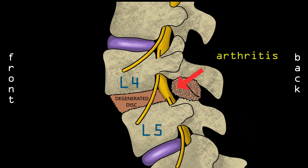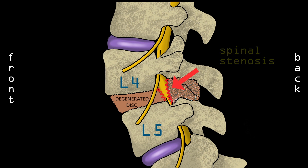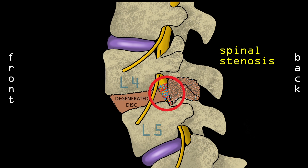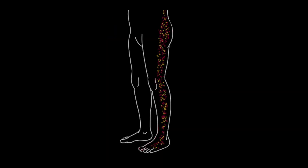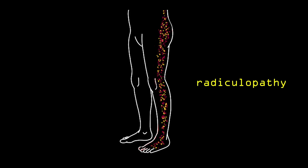The arthritis keeps growing more and more over time and can eventually start compressing the spinal nerves. This compression of the spinal nerves is called spinal stenosis. Spinal stenosis can cause back pain which radiates into the leg, a condition called radiculopathy.